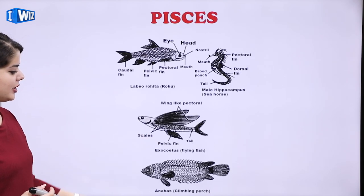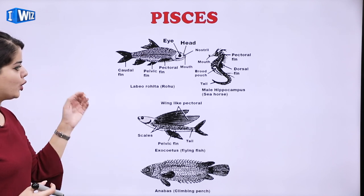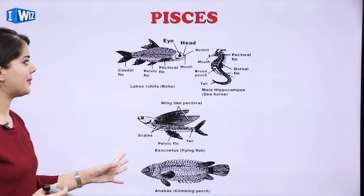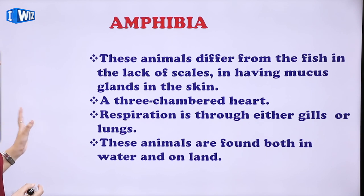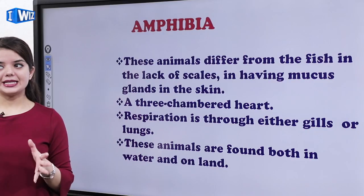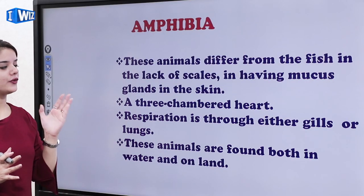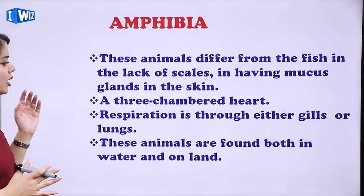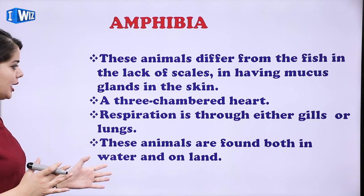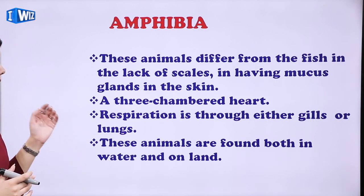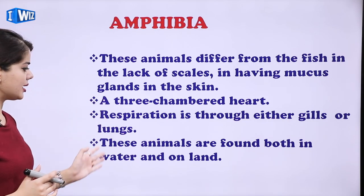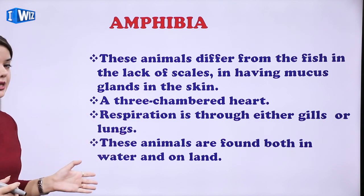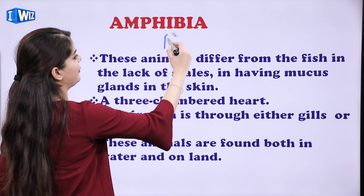Examples of Pisces include flying fish, climbing perch, Rohu, and seahorse. Then we have Amphibia. These animals differ from fish in the lack of scales, having mucus glands in the skin, a three-chambered heart, and respiration through either gills or lungs. These animals are found both in water and on land. Example is frog.